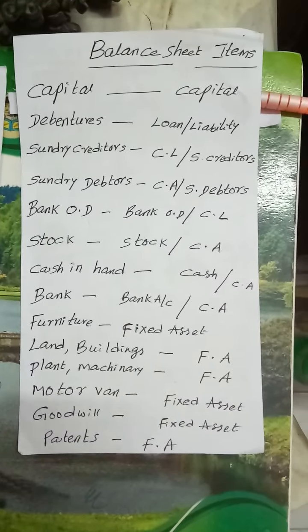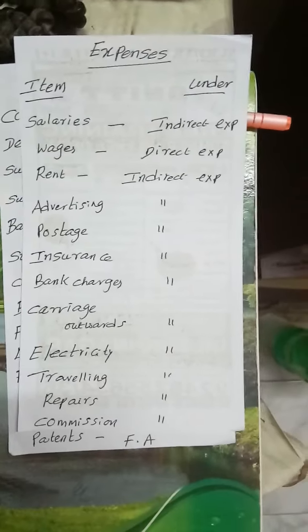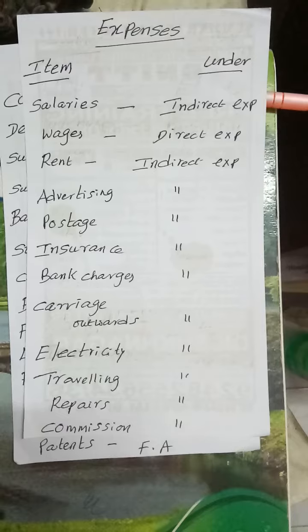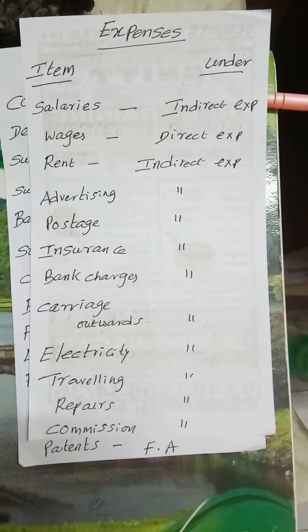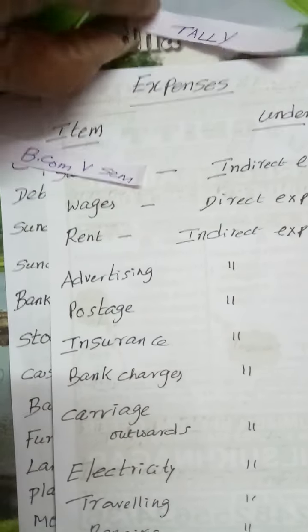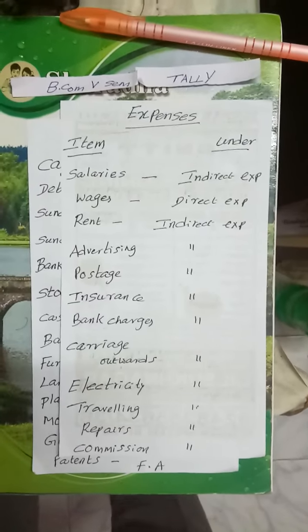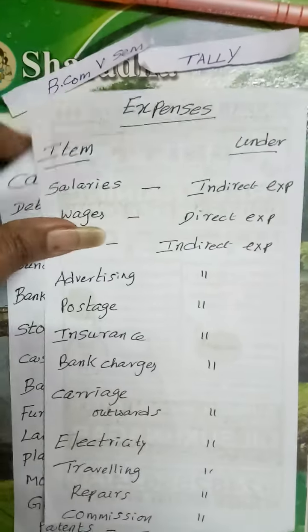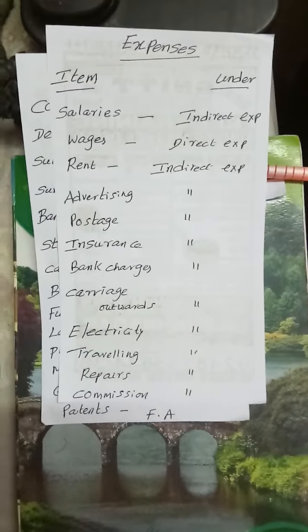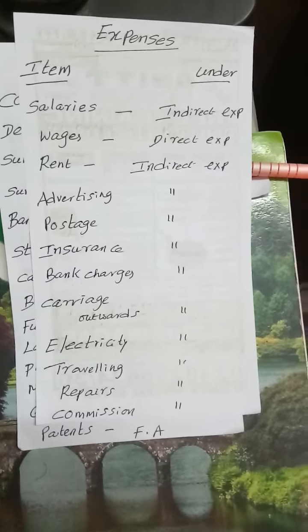These are the balance sheet items. After you record these balance sheet items, then immediately you enter some amounts of P&L account. These are the expenses which you will take in the profit and loss account. In final accounts we have one profit and loss account and one balance sheet. Just after you enter any amounts of your own choice — in the exam also the question will come asking you to give your own amounts — so after that you select the profit and loss account option and see the output how it is giving.